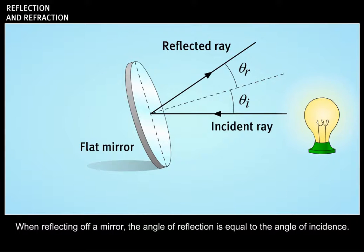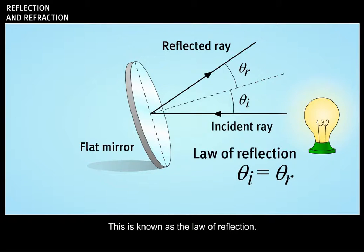When reflecting off a mirror, the angle of reflection is equal to the angle of incidence. This is known as the law of reflection. Reflection which obeys this law is called specular reflection.